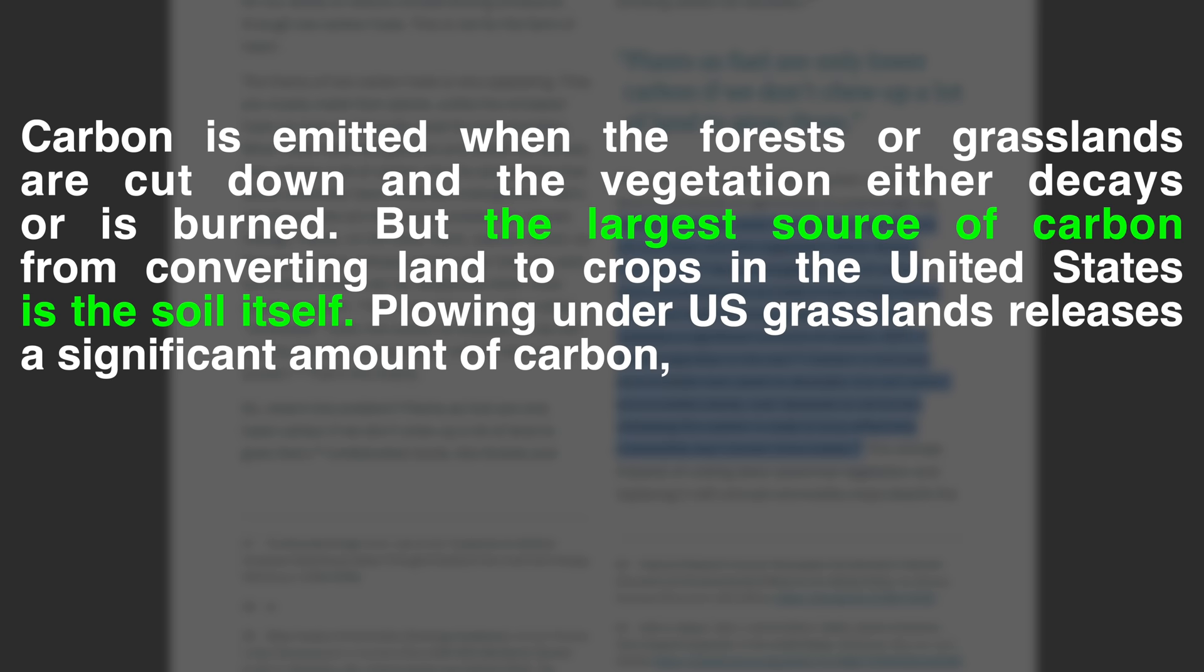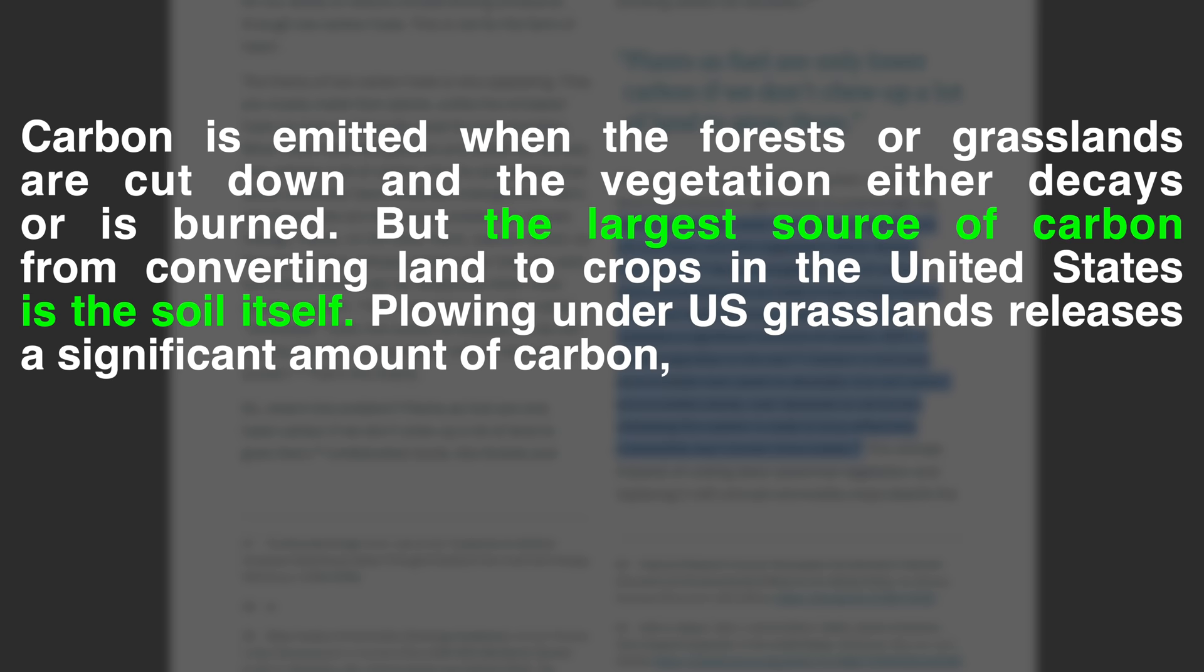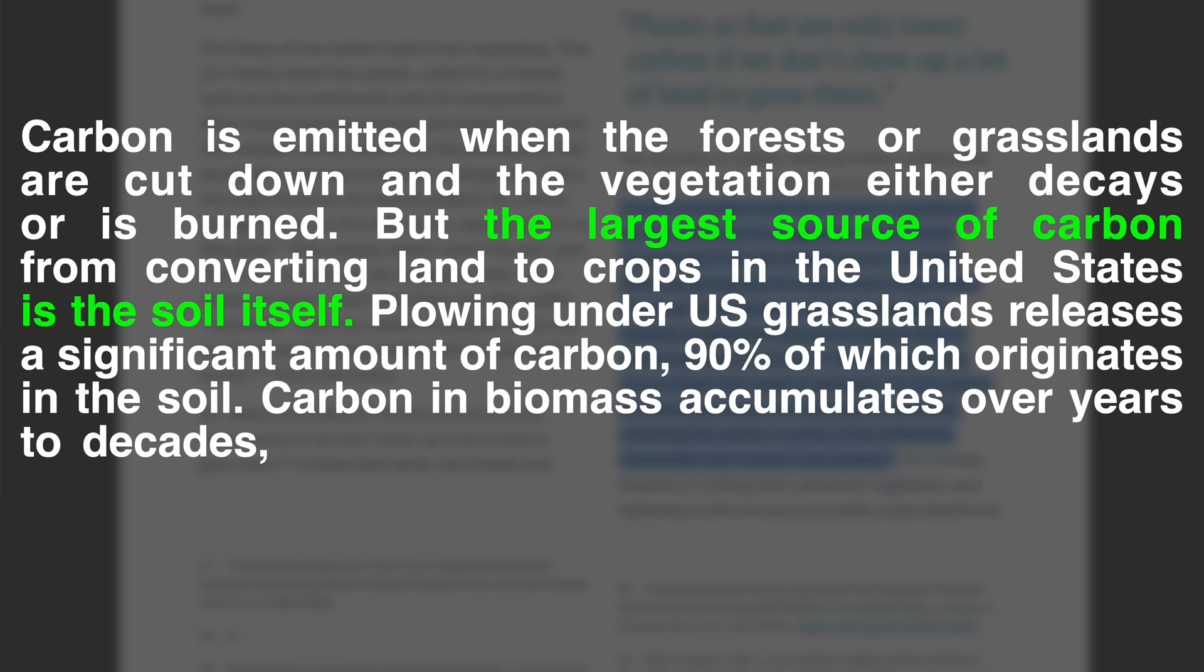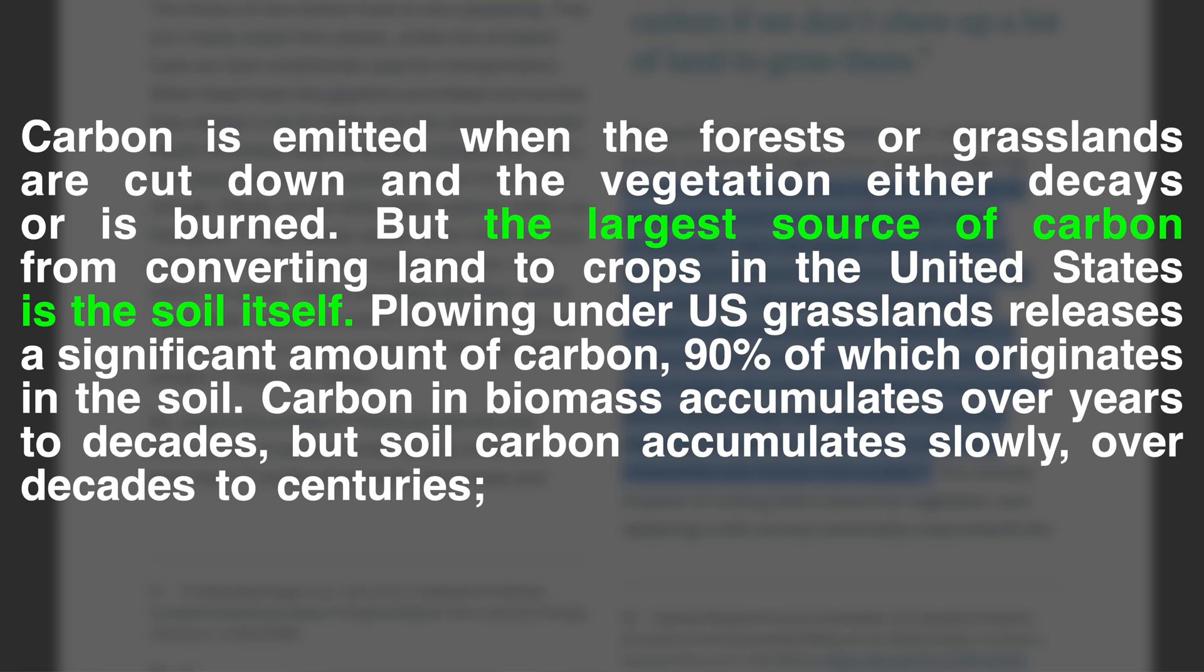In a document compiled by Cynthia Giles of Harvard Law School's Environmental and Energy Law Program, she notes, Carbon is emitted when the forests or grasslands are cut down and the vegetation either decays or is burned. But the largest source of carbon from converting land to crops in the United States is the soil itself. Plowing under U.S. grasslands released a significant amount of carbon, 90% of which originates in the soil. Carbon in biomass accumulates over years to decades, but soil carbon accumulates slowly over decades to centuries. Releasing the carbon in soils is thus effectively irreversible over human timescales.